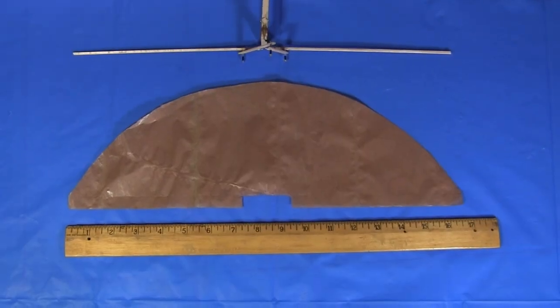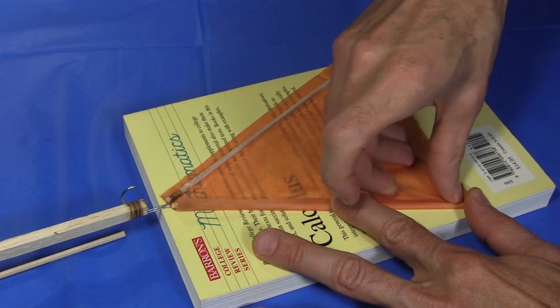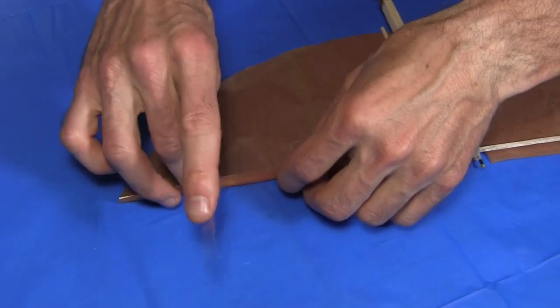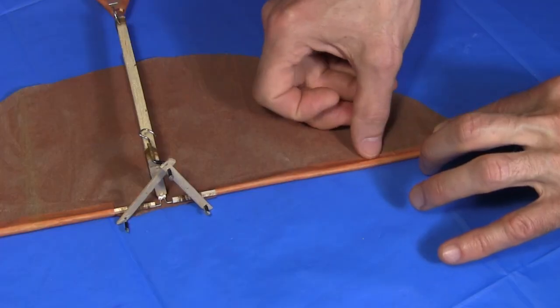Once it's all cut out, I have this. I mark out a piece for the tail next, and then attach that using thin strips of tape. I then do the folding and taping on one of the wings, again using thin strips of tape, and then the other wing.